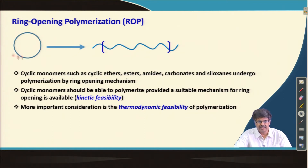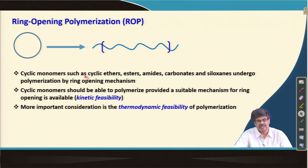So, in general, a cyclic monomer on ring opening gives a linear polymer. Cyclic monomers such as cyclic ethers, esters, amides, carbonates, and siloxanes undergo ring opening polymerization.